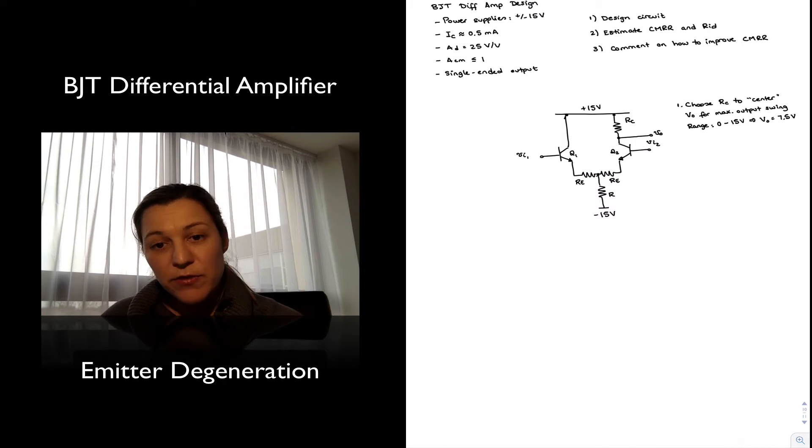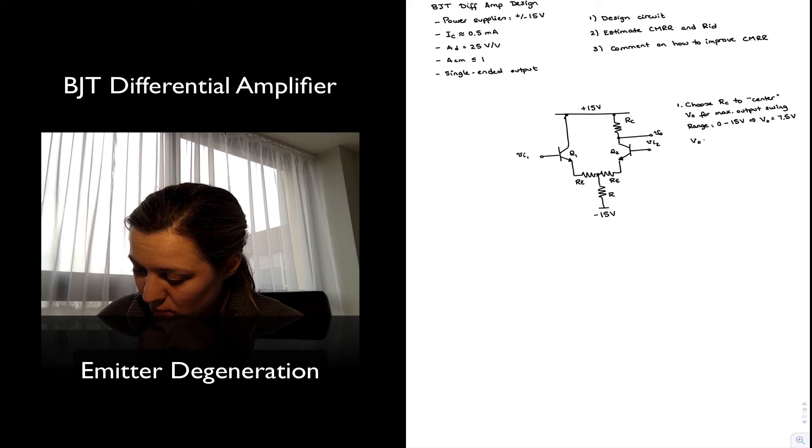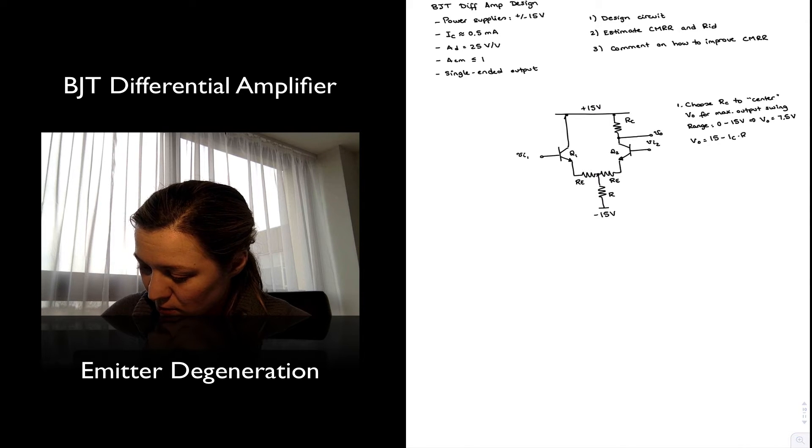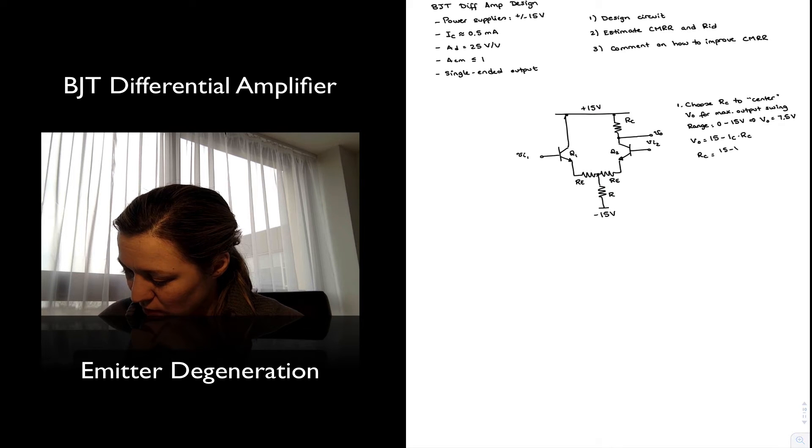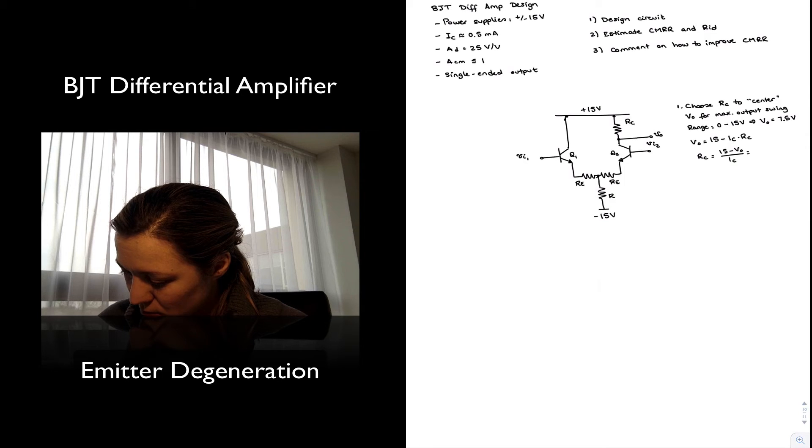So step number one, I am going to choose my RC resistor to center my output voltage for maximum output swing. And so if my range goes from zero to approximately 15V, that means I want my Vout, my DC value for Vout, to be equal to 7.5V. And since Vout is going to be 15V minus the voltage drop across RC, which is IC times RC, then my RC is going to be equal to 15 minus Vout divided by IC, which is 15 minus 7.5 divided by 0.5 milliamps, or 15 kilo ohms.